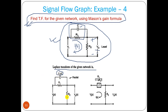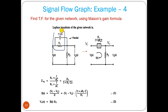We take the Laplace transform since we need the transfer function. The transfer function is the ratio of the Laplace transform of output to input when initial conditions equal zero. The Laplace transform of C is 1/(sC). The equivalent impedance of R1 parallel with 1/(sC) is Z = R1 / (1 + s*R1*C). We write the KVL equation for the loop.